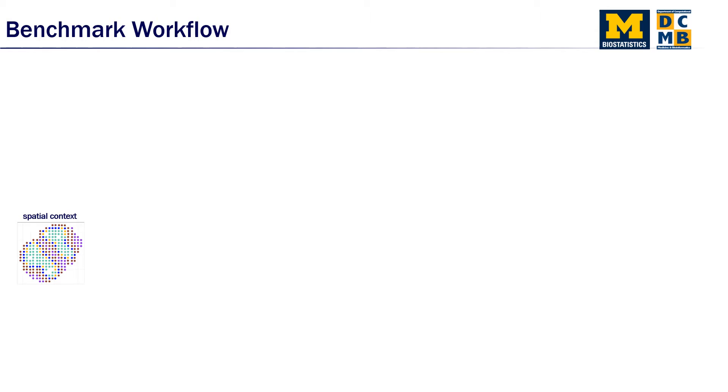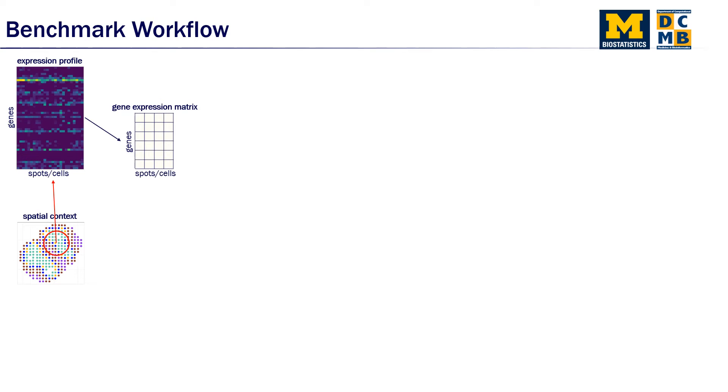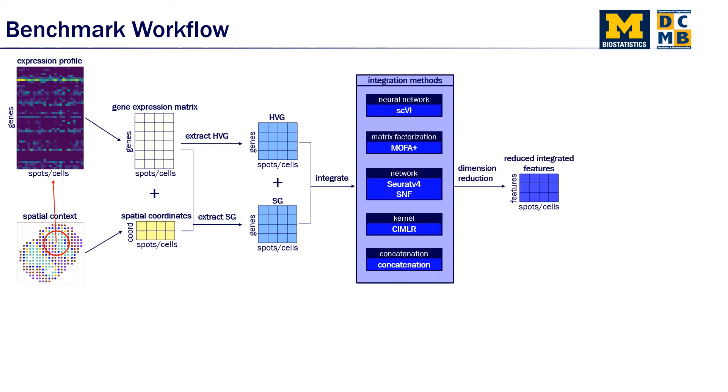A typical spatial transcriptomics data set has two components: the spatial coordinates and the corresponding gene expression information. Using the gene expression matrix, we extracted the highly variable genes, and using the gene expression matrix as well as the spatial coordinates, we extracted the spatially variable genes.